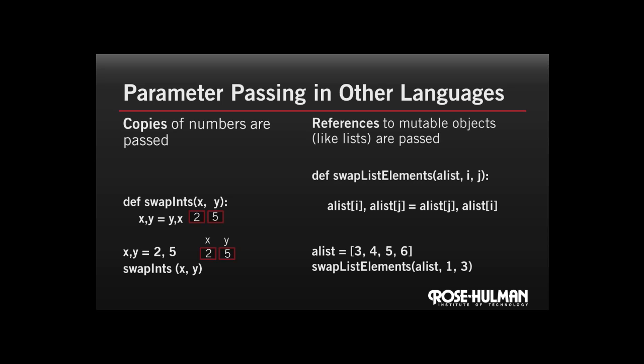Here we have a swapListElements function that takes a list and a couple of indices into that list. And it's going to swap the elements in those two positions. Down below, we declare a list and then call swapListElements. When we declare the list, we see it looks a little bit different. A list, which is an object, is just a reference to the actual location in memory where all the data is stored.